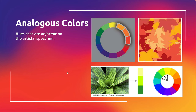Then we get into some color relationships. Analogous colors are a very common one — basically hues that are adjacent to each other on the artist spectrum. To be an analogous color, you basically can't skip a color.